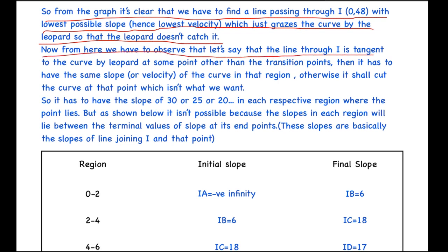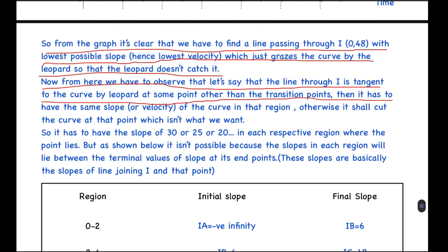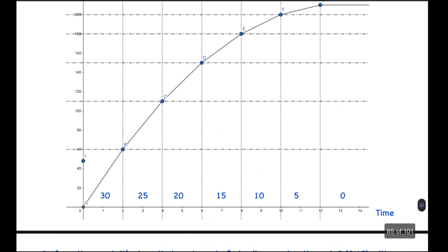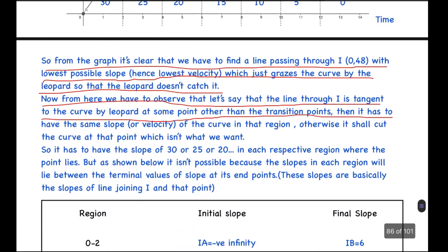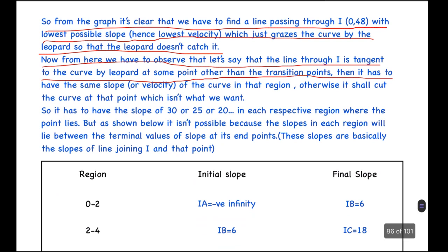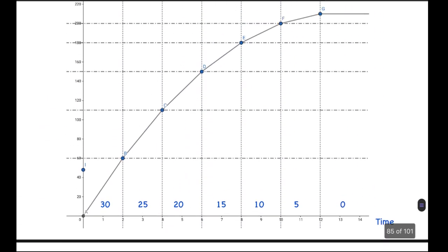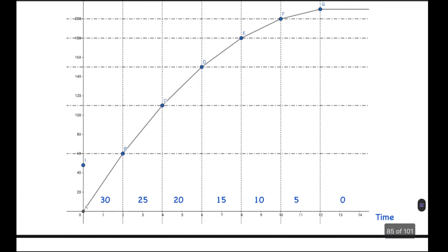Now from here we have to observe that let's say the line I is tangent to the curve by the leopard at some point other than the transition points. Here the transition points I have said to be B, C, D, and so on. If it is tangent at some point other than the transition points, it has to have the same slope or velocity of the curve at that region. Otherwise, it shall cut the curve at that point, which isn't what we want.